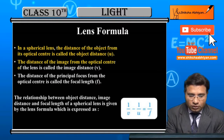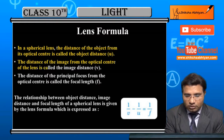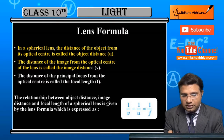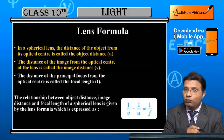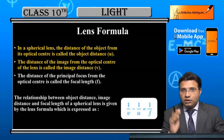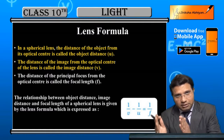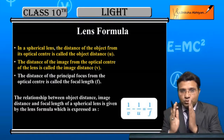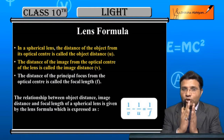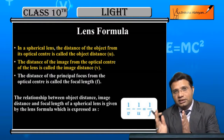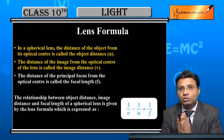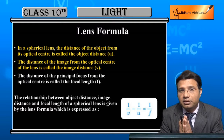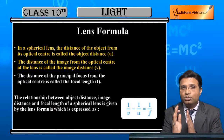The distance of the image from the optical center of the lens is called the image distance, denoted by v. जहाँ image बनेगी उसको हम optical center से measure करेंगे — optical center से image तक की उस distance को लेंगे हम image distance, denoted by v.